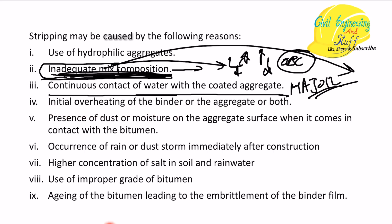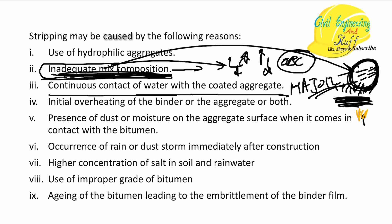Another reason is initial overheating of the binder or the aggregate during mix preparation. Too much heating of the bitumen burns the binder - the molecules forming cohesive bonds are destroyed. The overheated binder no longer possesses bonding properties, and stripping may occur. Overheating or underheating of aggregates causes the same scenario and also leads to inadequate mix composition.